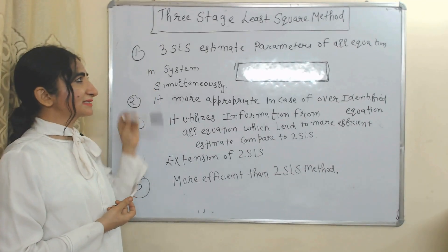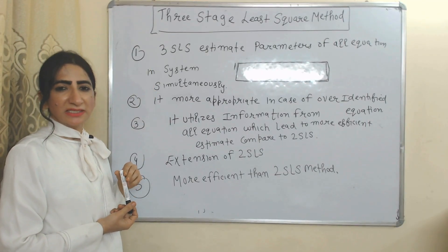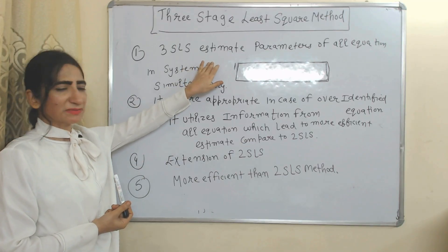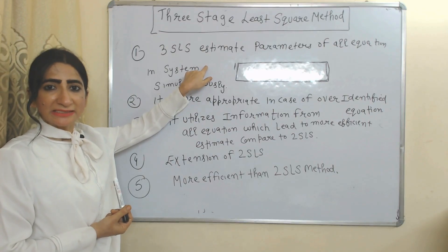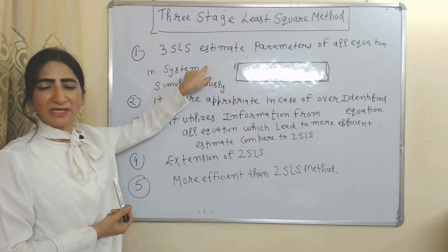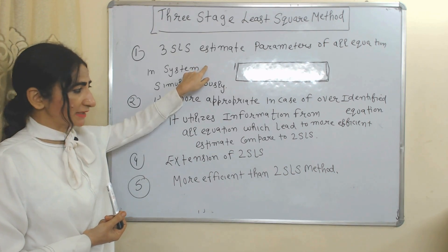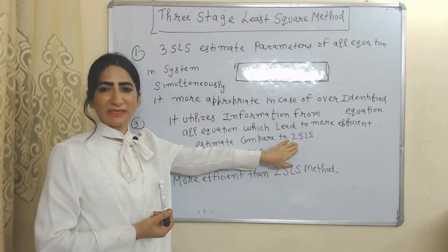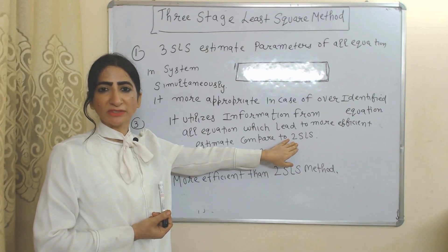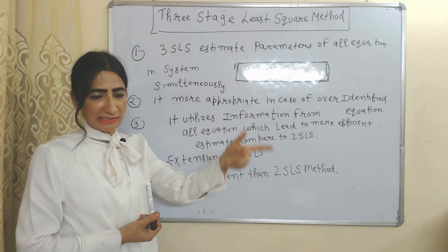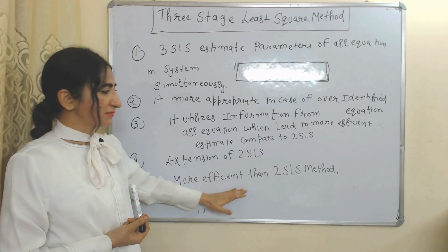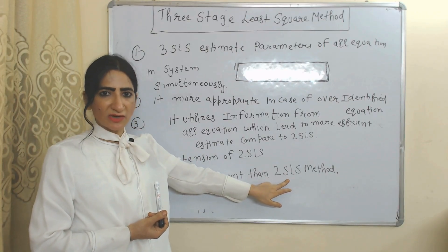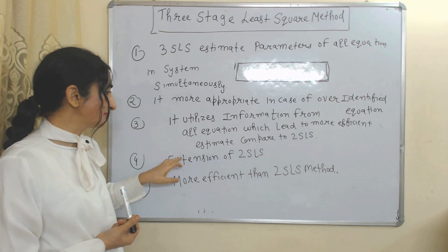Now we will see the Three-Stage Least Squares (3SLS) method. This method estimates parameters of all equations simultaneously, which is why it is more efficient compared to the Two-Stage Least Squares method. It can be considered an extension of 2SLS.